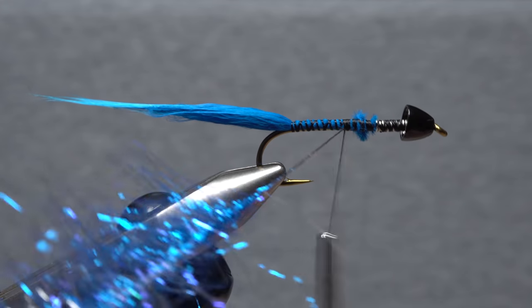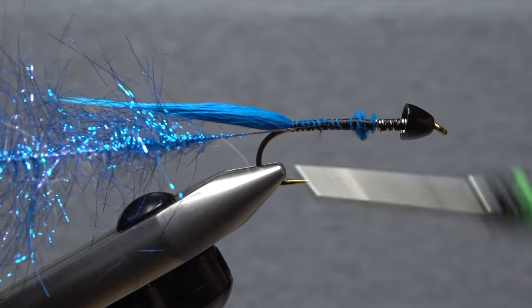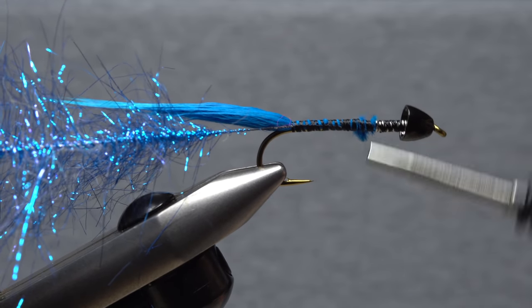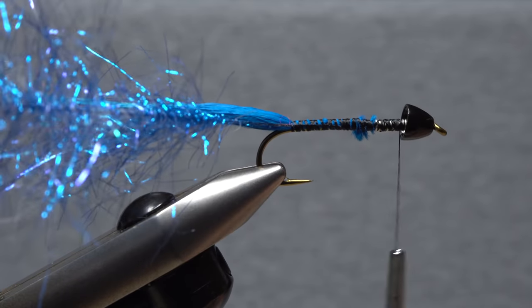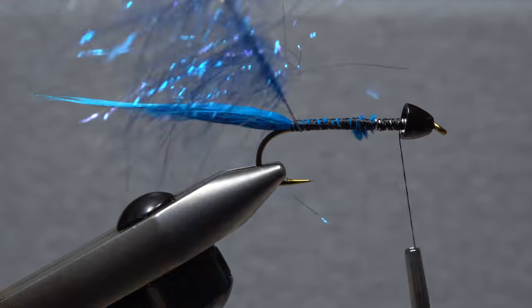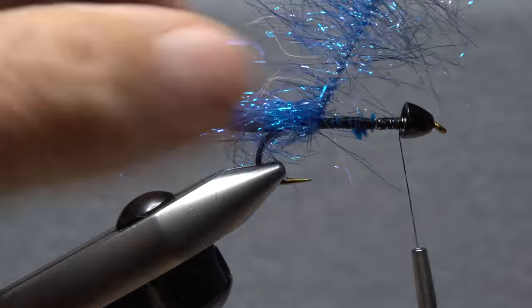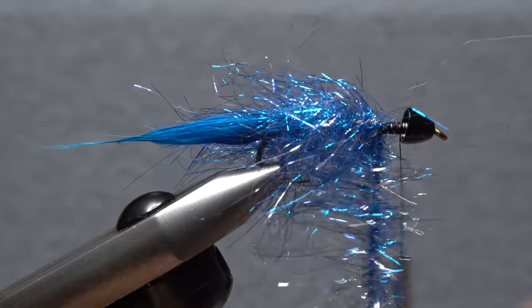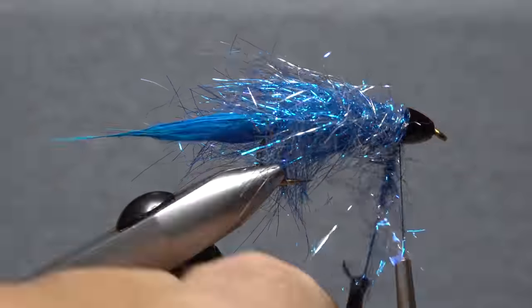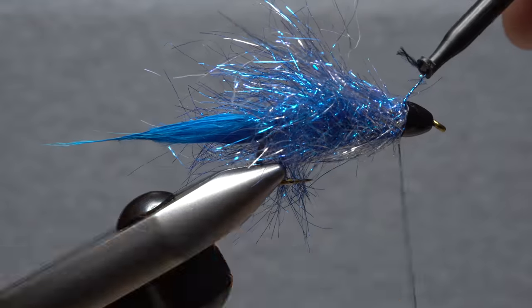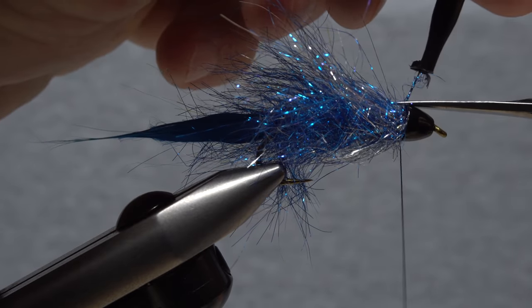Start taking wraps with your tying thread as you pull the noodle rearward. Go all the way back to the base of the tail, then end with your thread behind the cone. Start taking touching wraps with the noodle up the shank, preening the ice dub rearward as you go. When you reach your tying thread, use it to anchor the very bottom of the noodle and snip any excess off close.